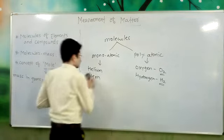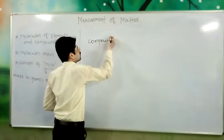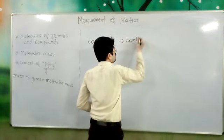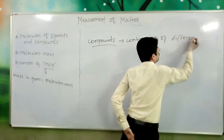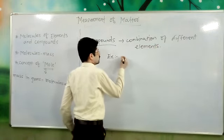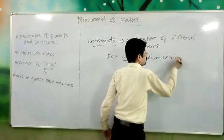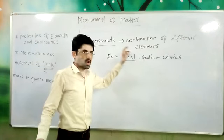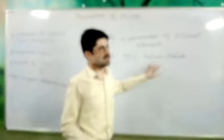Now we are going to see what is meant by compounds. Compounds have a molecular structure which is formed by the combination of different elements. For example, sodium chloride (NaCl): in a single molecule of sodium chloride there is one atom of sodium and one atom of chlorine. The combination of sodium along with chlorine forms one molecular structure of sodium chloride, which we call a compound.